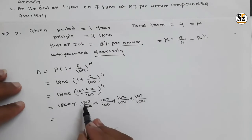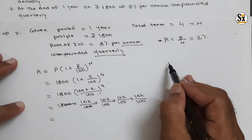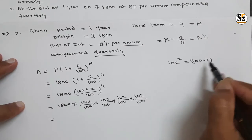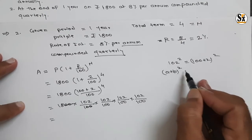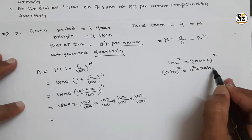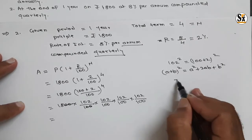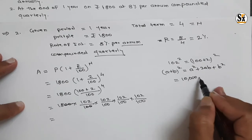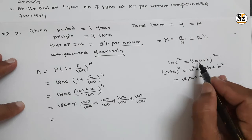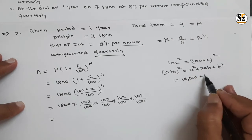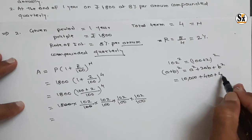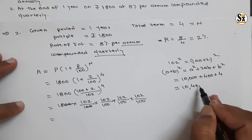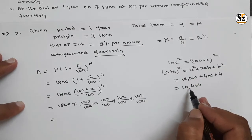Now calculate 102 × 102, i.e., 102². Write it as (100 + 2)². Using (a + b)² = a² + 2ab + b²: a = 100, b = 2. So: 100² = 10,000; 2ab = 2 × 100 × 2 = 400; b² = 4. Therefore 102² = 10,000 + 400 + 4 = 10,404.